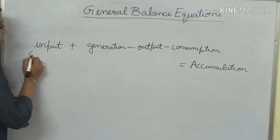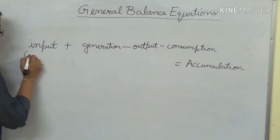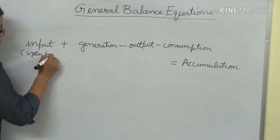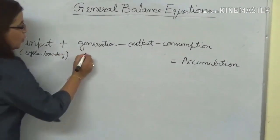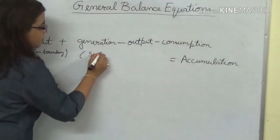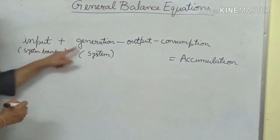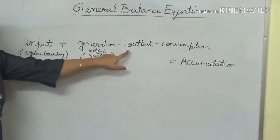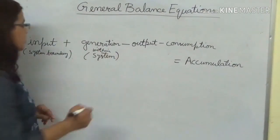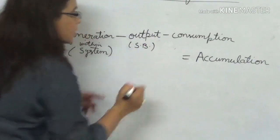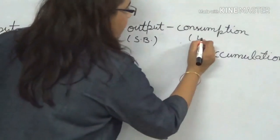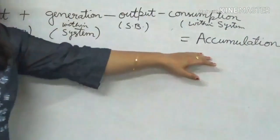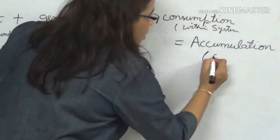In the general balance equation, input is the material crossing the system boundary coming in. Generation takes place within the system — your process or process unit. Output is whatever material leaves the system boundary. Consumption takes place within the system. And this equals the accumulation of material within the system.